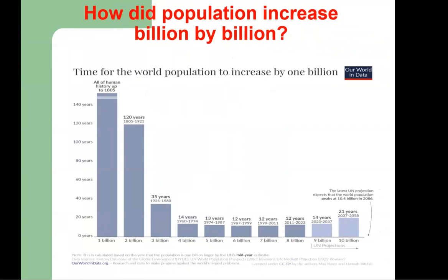In summary, this is how the world population increased billion by billion: all of human history up to 1805 to reach the first billion; 120 years to the second billion; 35 years to the third; 14 years to the fourth (1960–1974); 13 years to the fifth; 12 years each to the sixth and seventh billion. In 2023 the world population reached 8 billion, also taking 12 years from the seventh. UN projections indicate the world population will reach 10 billion between 2037 and 2058.